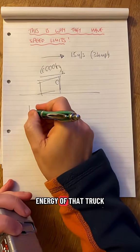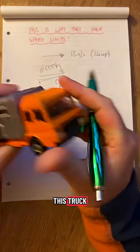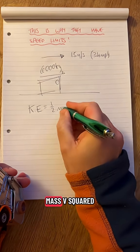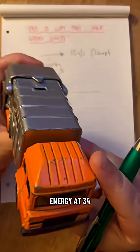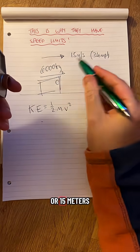What is the energy of that truck? What is the kinetic energy of this truck? The formula for kinetic is a half mass, V squared. So this will give us the energy at 34 miles an hour, or 15 metres per second.